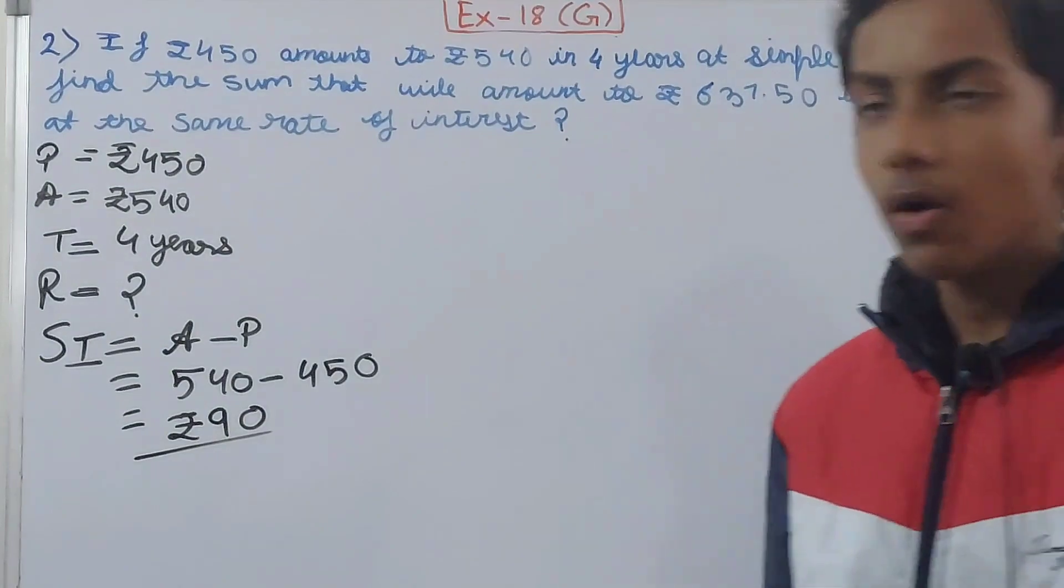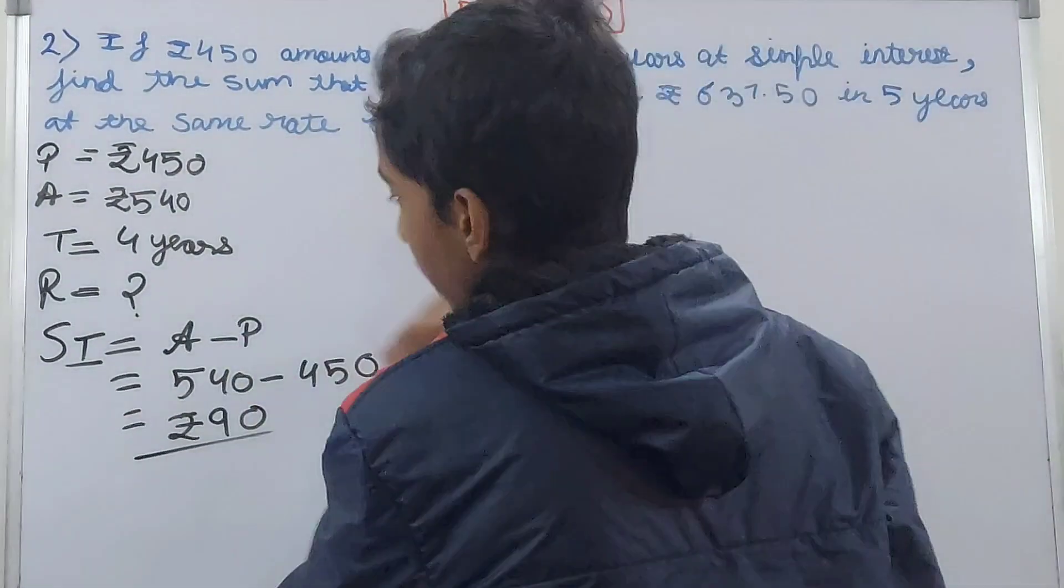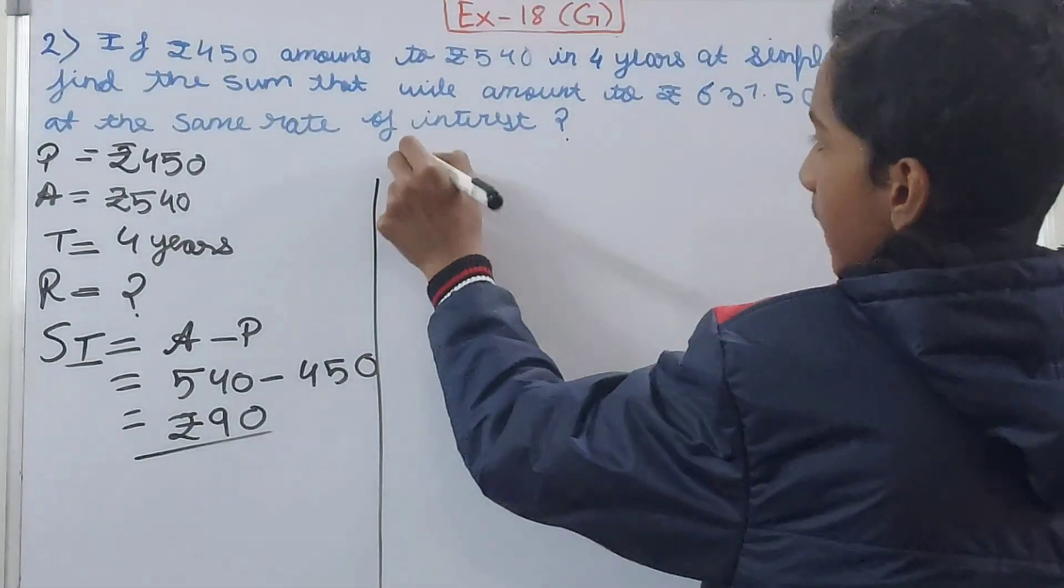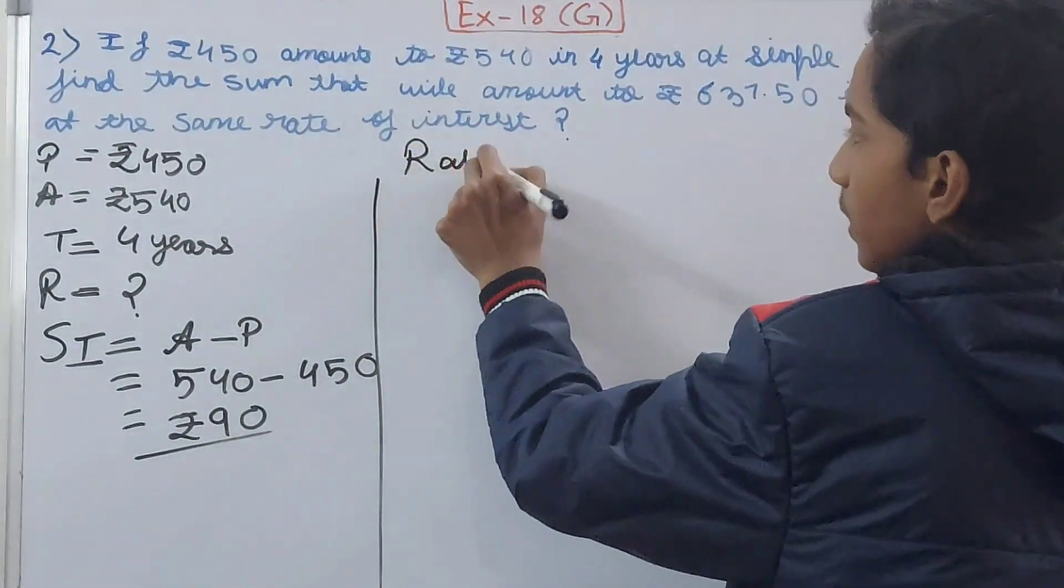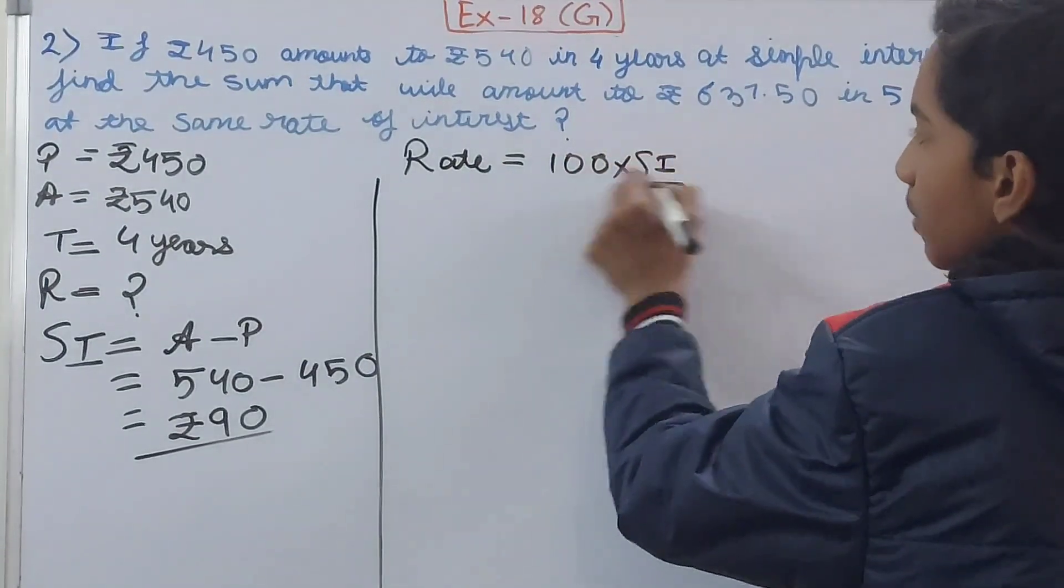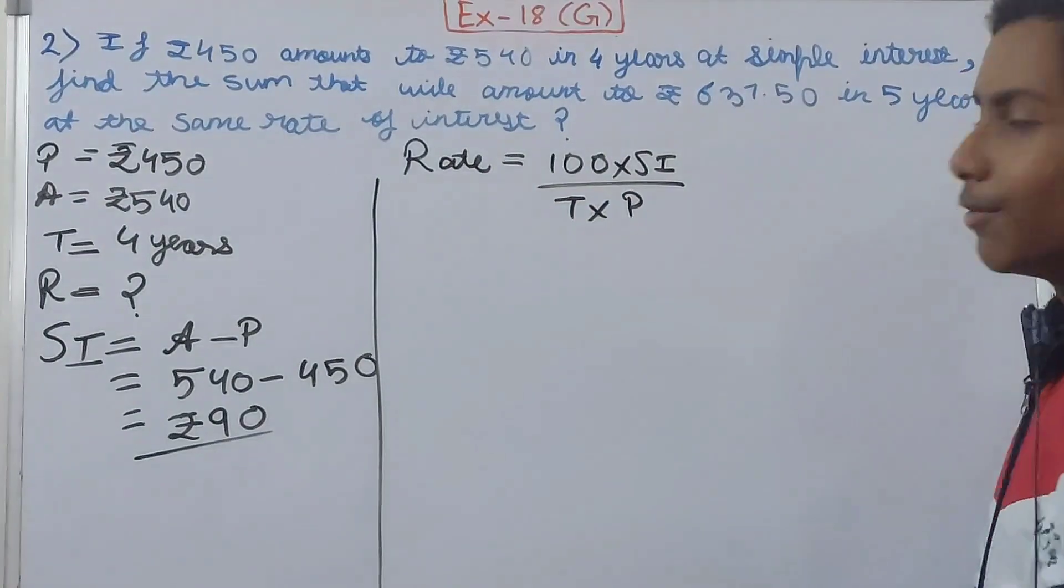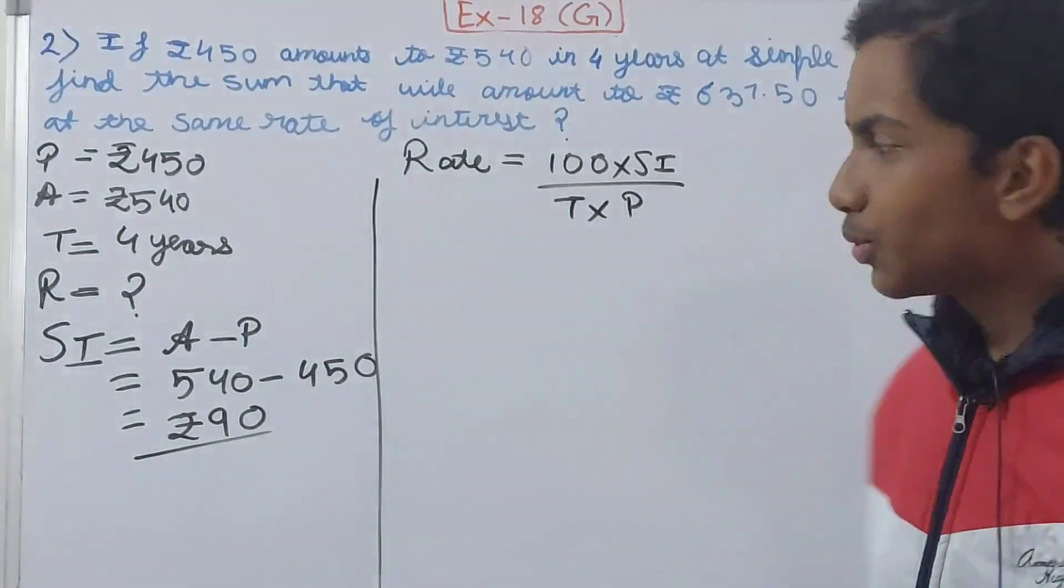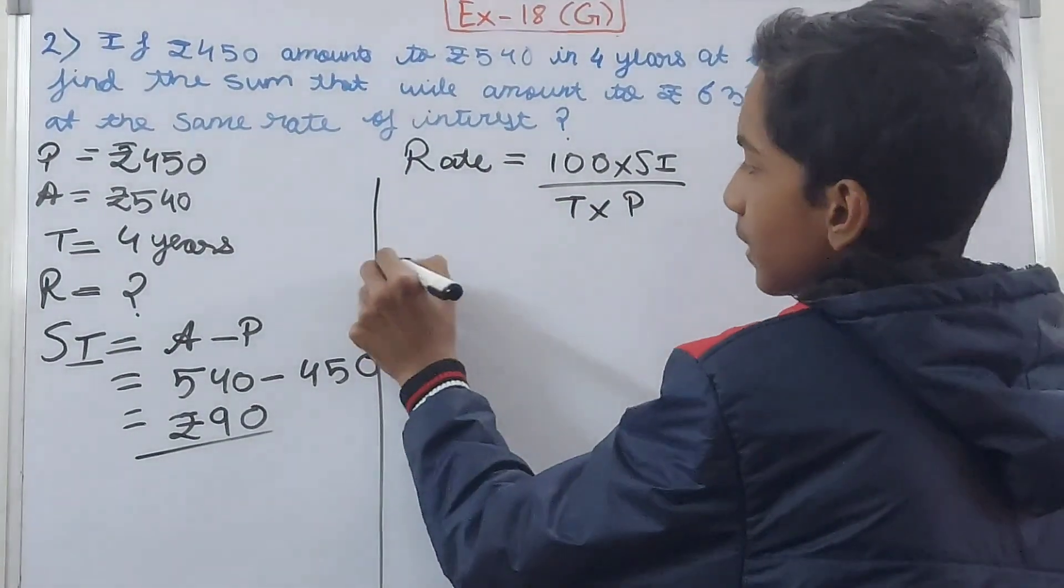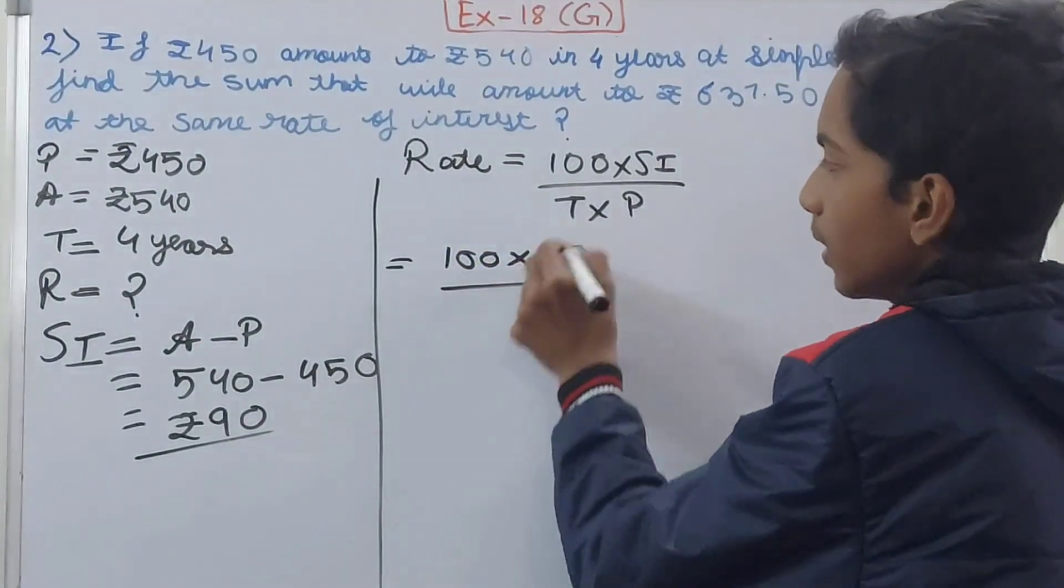And on top of it, you see that the rate formula we will use. The formula for finding the rate is: R = (100 × SI) / (T × P). 100 into simple interest will always be there in the numerator upon the time into the principal.